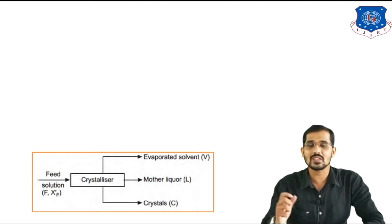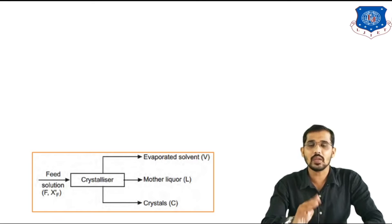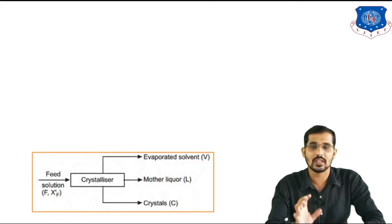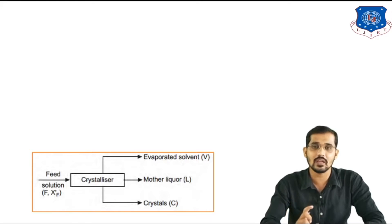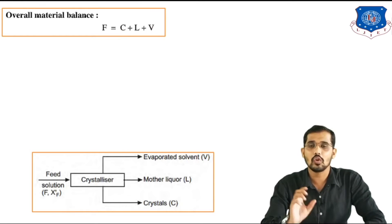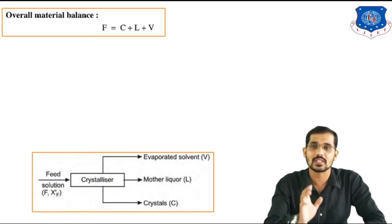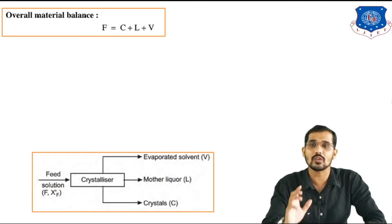Now we will see how to take the material balance over the crystallization operation. There is one inlet stream and three outlet streams: feed solution (inlet), evaporated solvent (V), mother liquor (L), and crystals (C). The overall material balance is: F = C + L + V, meaning the inlet stream equals the sum of all outlet streams.